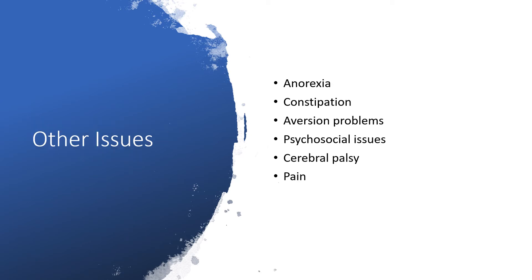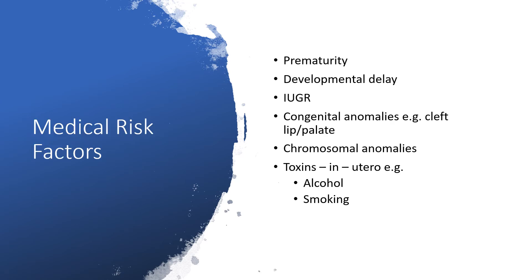Other issues include anorexia, constipation, aversion problems, psychosocial issues, cerebral palsy, and pain. Medical risk factors include prematurity, developmental delay, intrauterine growth restriction, congenital anomalies such as cleft lip and palate, chromosomal anomalies, and toxin exposure in utero — such as alcohol causing fetal alcohol spectrum disorder, and smoking causing intrauterine growth restriction.